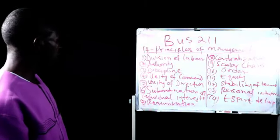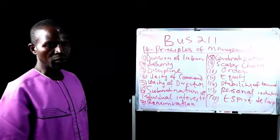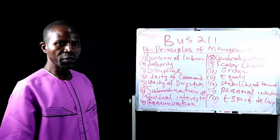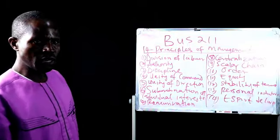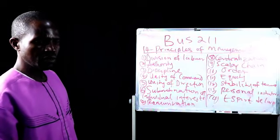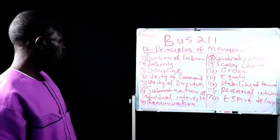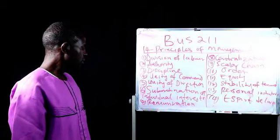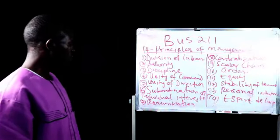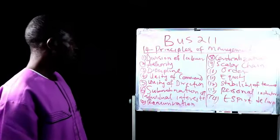Then we have the principle of remuneration. According to Fayol, remuneration — which is the pay system — should be in accordance with the productivity of the employee. That is, if the productivity of employees increases, remuneration should increase; and if the productivity of employees decreases, then remuneration would decrease.